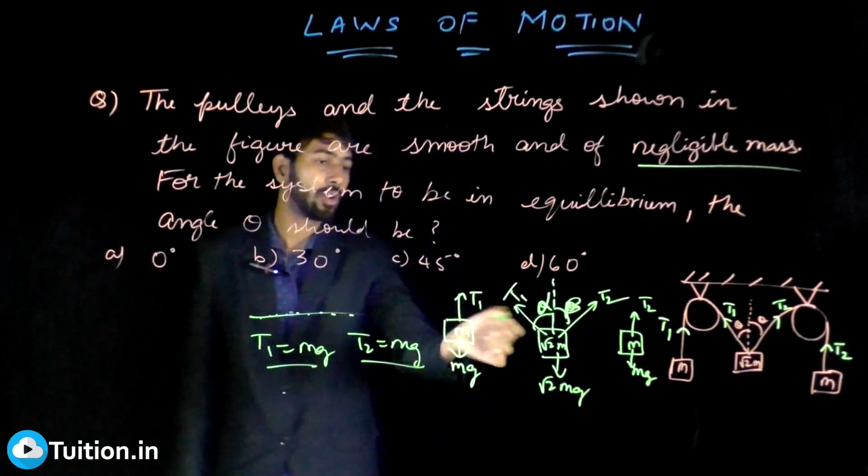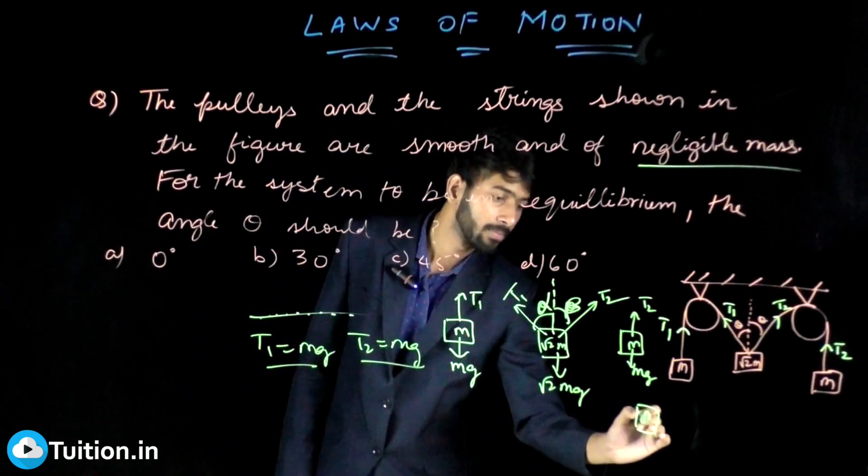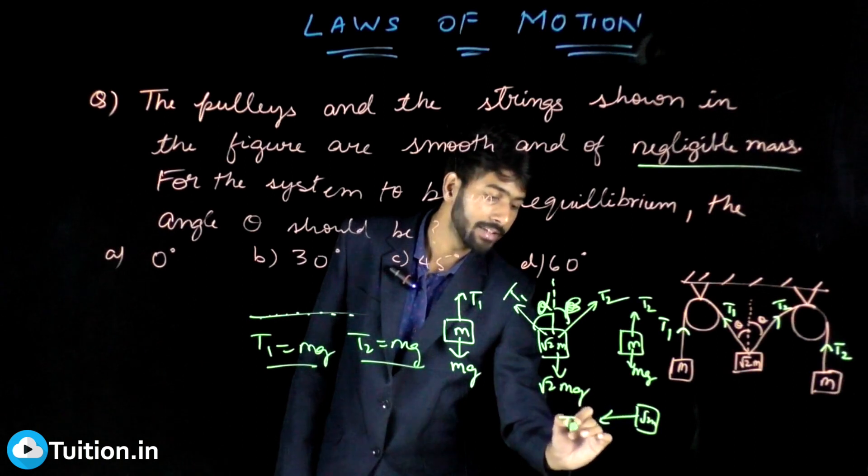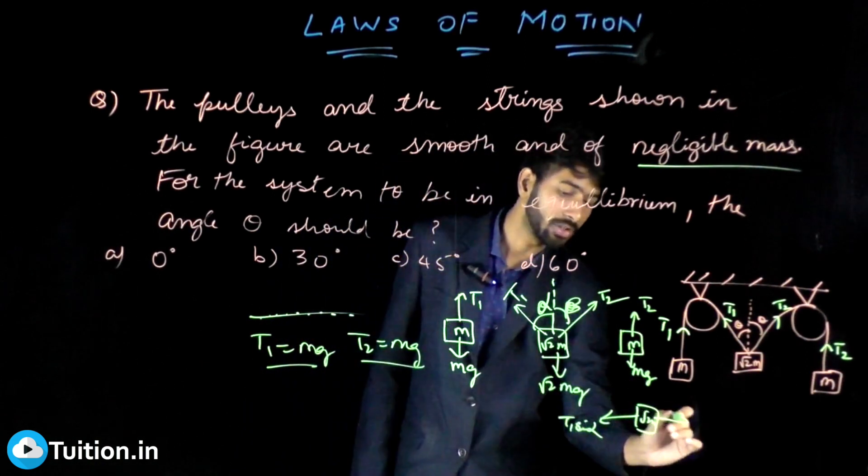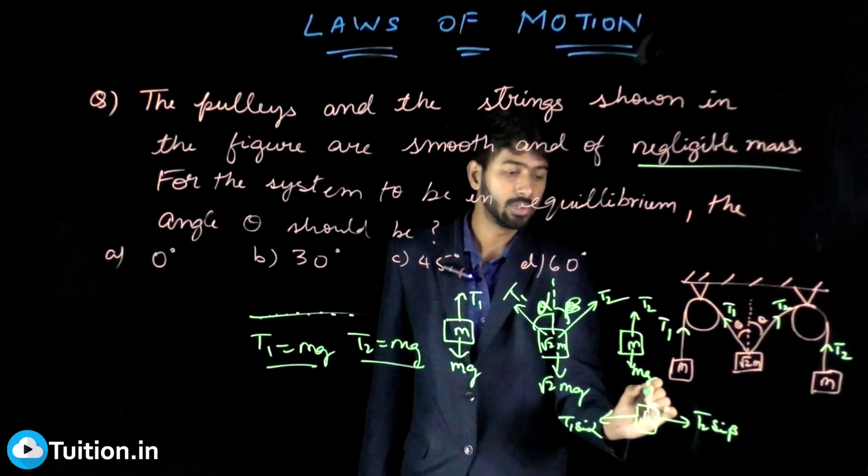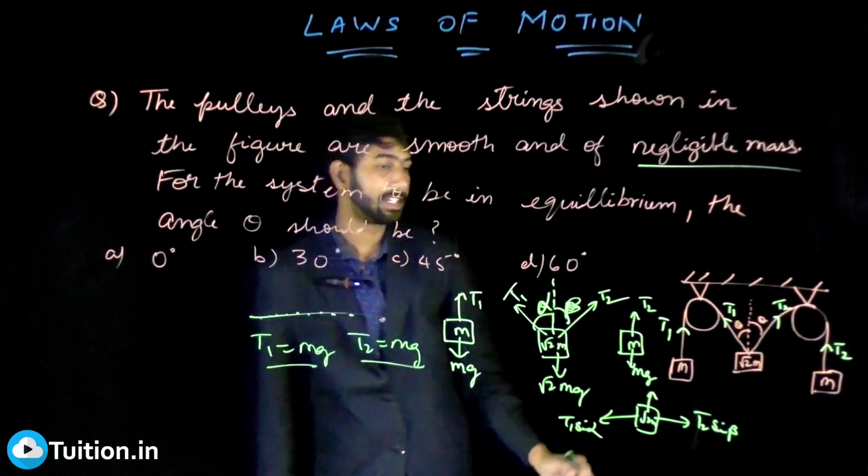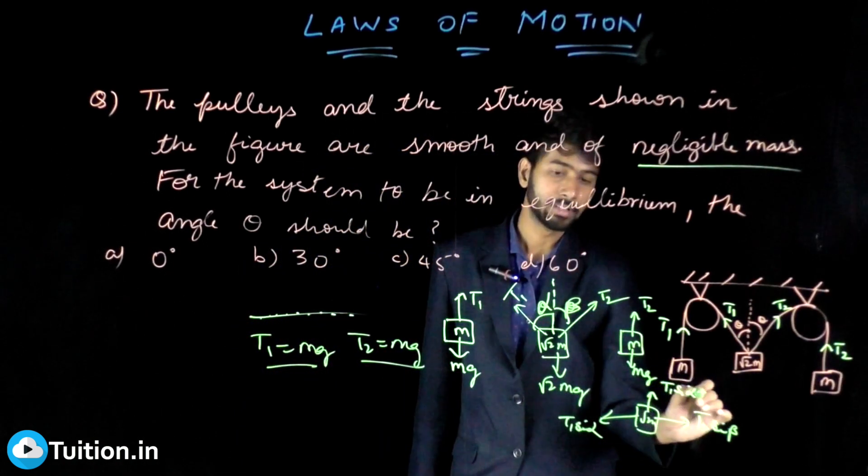T1 sin alpha is in this direction and T2 sin beta is in this direction, and then this you could say is T1 sin alpha plus T2 sin beta and √2mg.